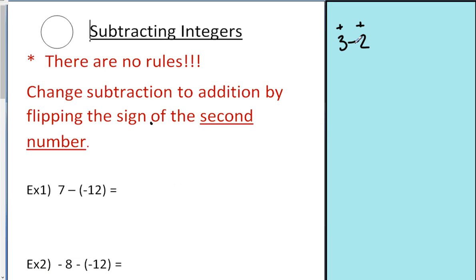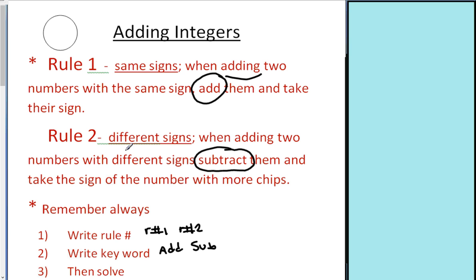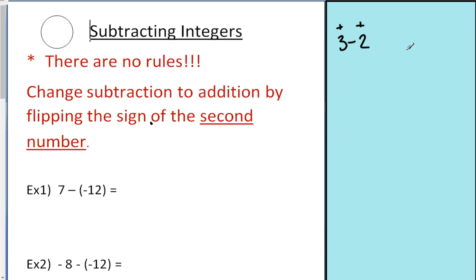What we're doing here is subtracting, so it's not rule number 1. Then you might think it's rule number 2, but if you read rule number 2, it also says 'when adding two numbers.' So subtraction doesn't follow rule 1 or rule 2. What we're going to have to do is either make up some new rules, or turn this into an addition problem.